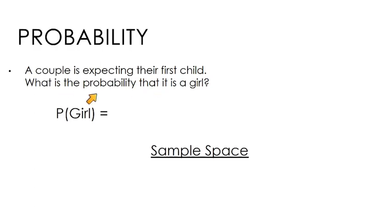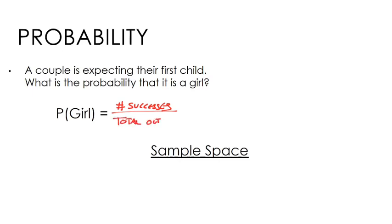A couple is expecting their first child — what is the probability that it's a girl? To find the probability of a girl, we're looking for number of successes out of total outcomes. Our sample space is boy and girl, so there are two possible outcomes. There's only one outcome in our sample space that would be a success, so the probability of having a girl is one out of two.